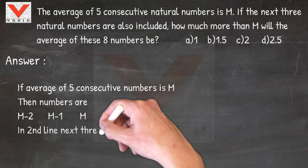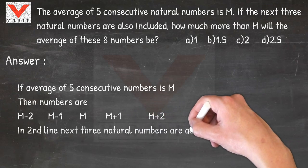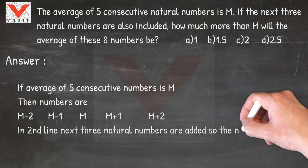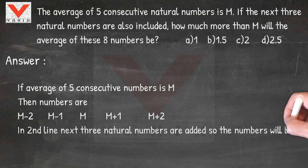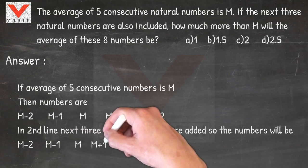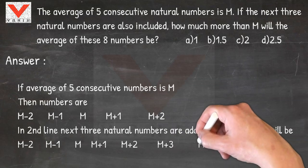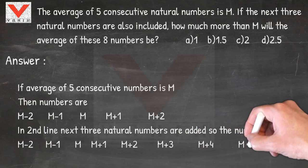In second line, next three natural numbers are added so the numbers will be m minus 2, m minus 1, m, m plus 1, m plus 2, m plus 3, m plus 4, m plus 5.